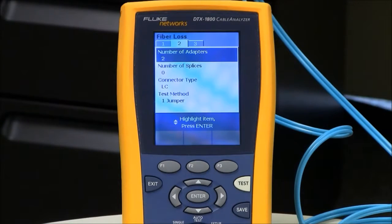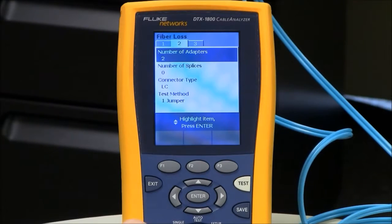My number of splices is 0, even though I'm using mechanical connectors today. When I say mechanical connectors, I'm talking about types such as the Unicam, which have a mechanical splice inside. That's part of the connector. You do not add an extra splice count in there for each of those connectors. My connector type is LC. That's not going to affect the outcome of the test result. That's just going to affect the help screens on the DTX cable analyzer.